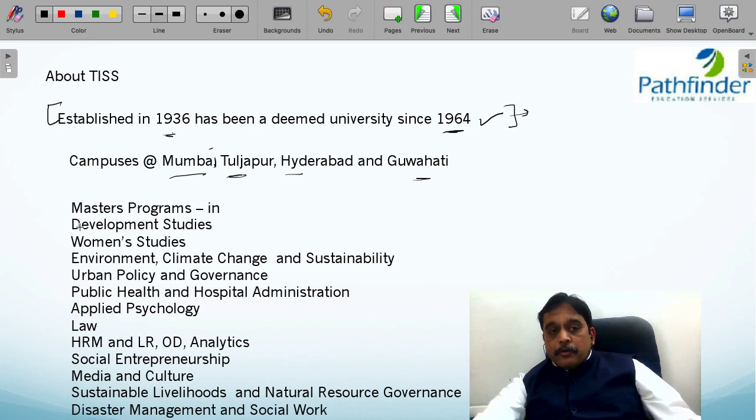They offer master's programs in a whole host of things. In fact, their master's programs are not MBA but MA or MSc programs. That's one difference between TISS and a typical B school. The master's programs are in development studies, women's studies, environment, climate change and sustainability, urban policy and governance, public health and hospital administration, applied psychology, law, HRM, labor relations, organizational development and analytics, social entrepreneurship, media and culture studies, sustainable livelihoods and natural resource governance, and disaster management. I don't think there is any other institute in India that offers this mix of courses.